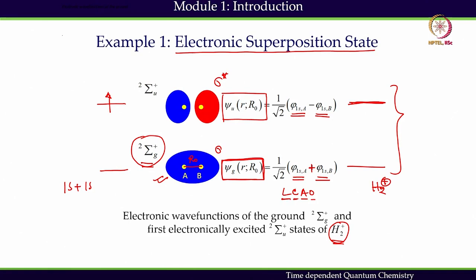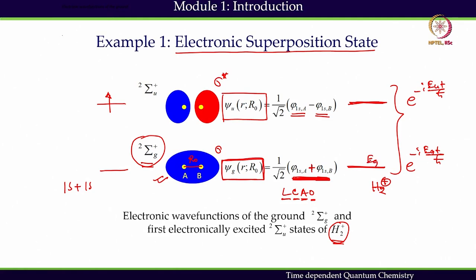LCAO is also a linear combination of two atomic orbitals, but there is a difference between superposition and LCAO: LCAO does not include the temporal phase factors of individual atoms. In the superposition scheme, we have two states that we linearly combine with their characteristic phase factors — e^(−iEG·t/ħ) for the ground state and e^(−iEU·t/ħ) for the excited state, with corresponding energies EG and EU.